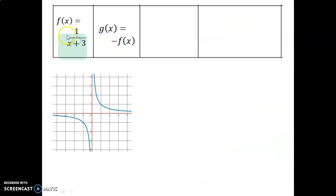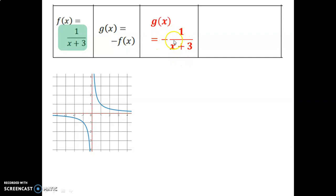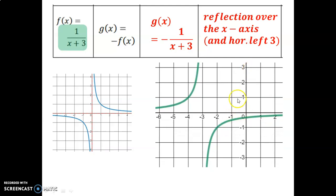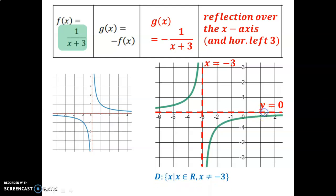For the last transformation example, applying a negative to the entire function gives a reflection over the x-axis, making y values negative. Combined with x plus 3 in the denominator — a horizontal translation left 3 units — the graph reflects and shifts left. The vertical asymptote moves to x equals negative 3, and the horizontal asymptote remains at y equals 0.